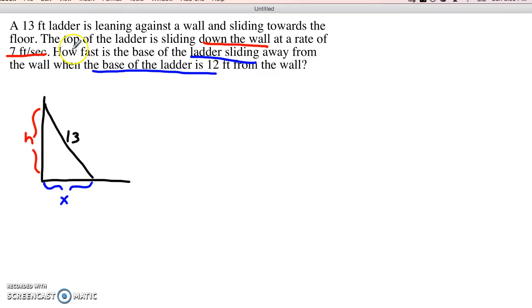So let's decode this problem a little bit. The top of the ladder is sliding down the wall at a rate of 7 feet per second. That means that dh dt, which is to say the rate of change of the height of the ladder with respect to time, is negative 7 feet per second since it's going down. In other words, the top of the ladder is moving downwards negative 7 feet per second.